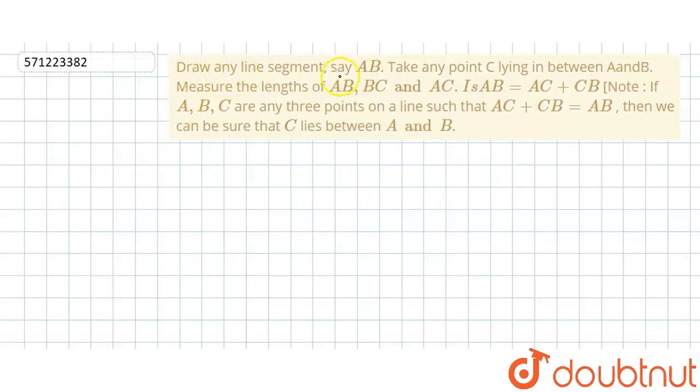The question says: Draw any line segment, say AB. Take any point C lying in between A and B. Measure the lengths of AB, BC, and AC. If AB equals AC plus BC, note that if A, B, C are three points on a line such that AC plus CB equals AB, then we can be sure that C lies between A and B.